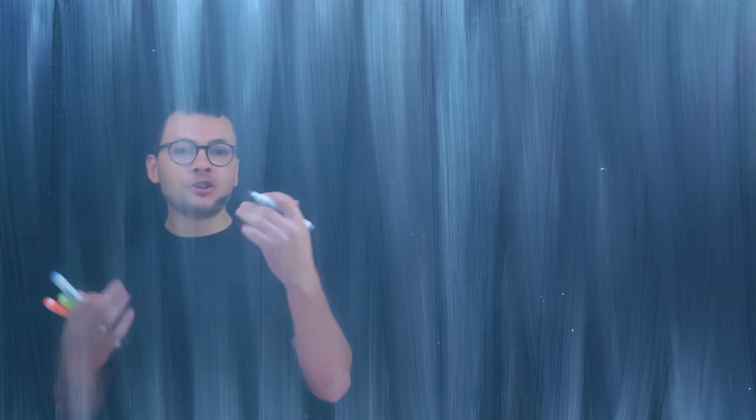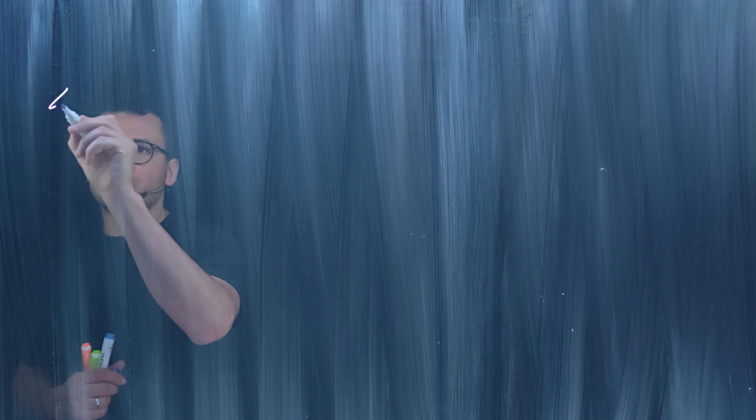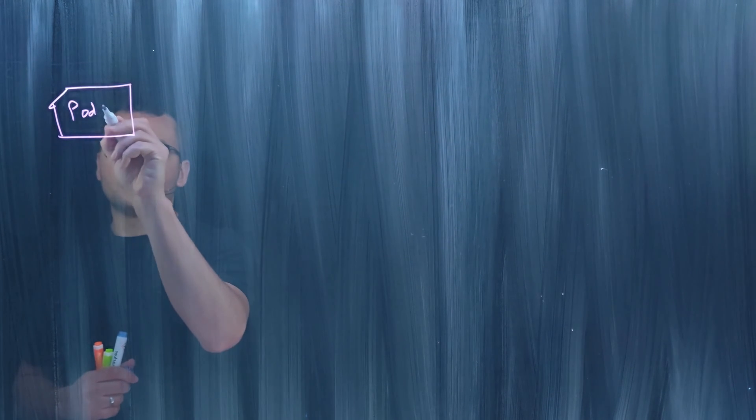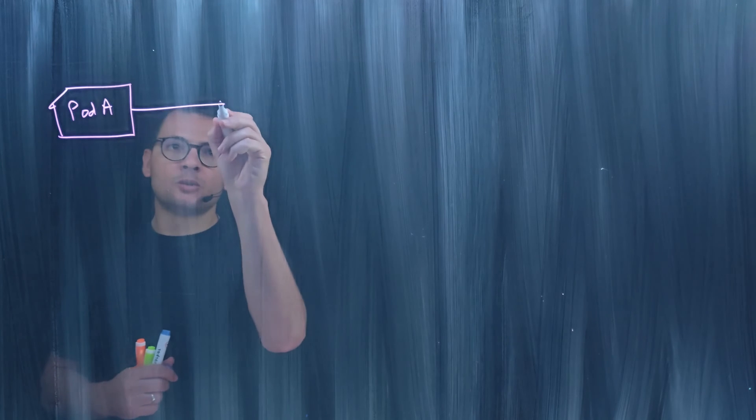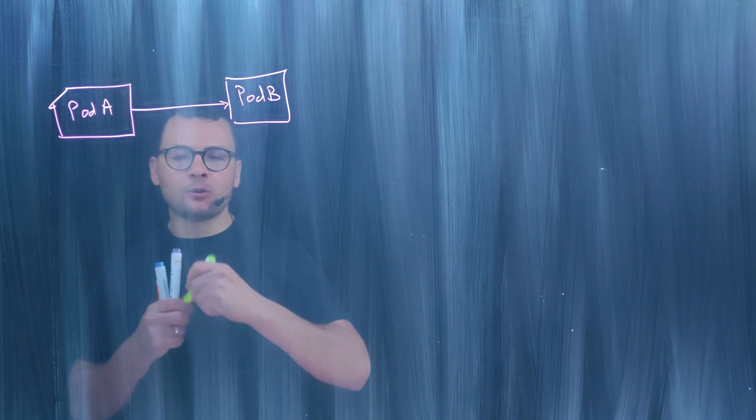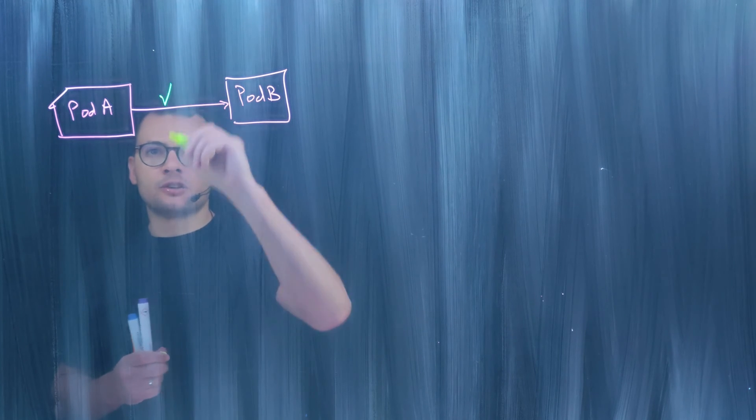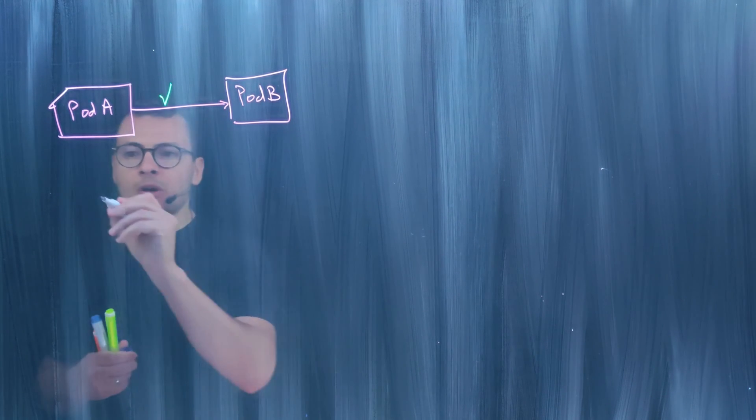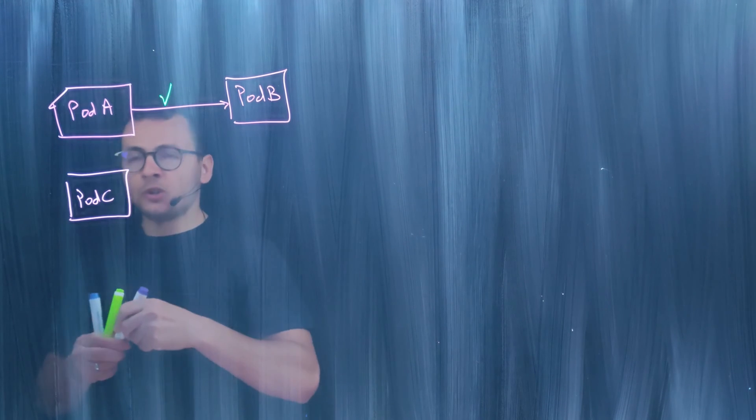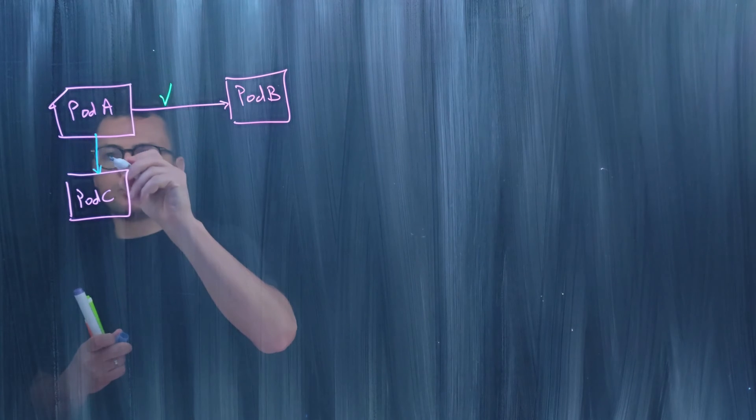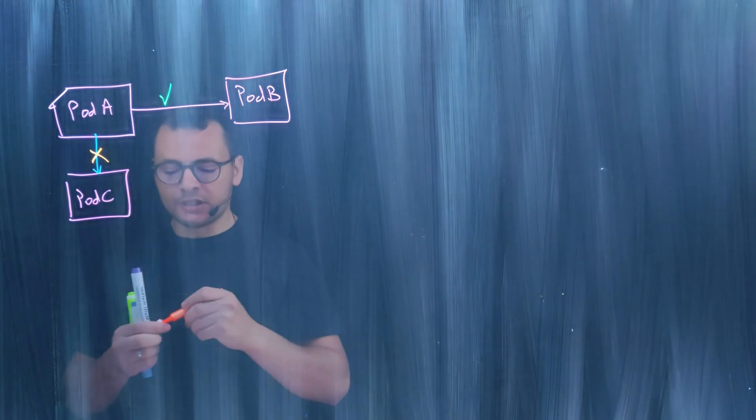We typically use network policies when we want to filter traffic between one or multiple pods. For example, I have Pod A and Pod A will connect to Pod B. I can apply a network policy that will allow this connection. If I have another pod, Pod C, and I don't want Pod A to connect to Pod C, I will apply a deny policy.